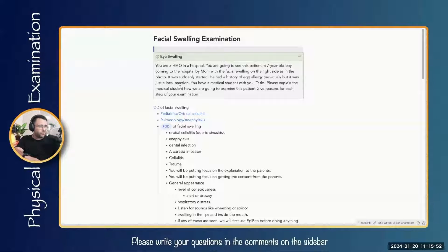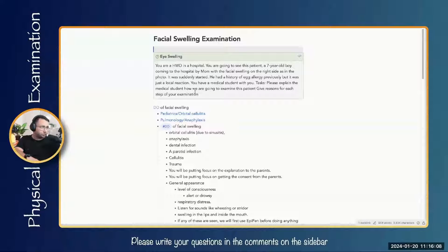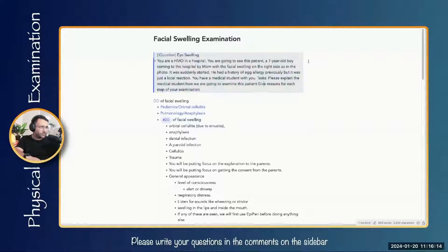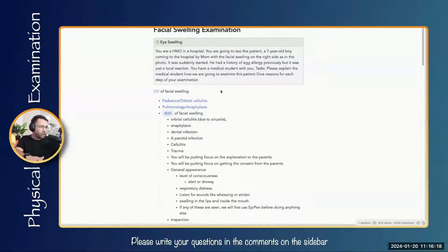The case from the recall is: you are a HMO in a hospital going to see a seven-year-old boy coming in with his mom with facial swelling on the right side, as shown in the photo. It was suddenly started. He had a history of egg allergy previously, but it was just a local reaction. You have a medical student with you. The task is to explain to the medical student how you are going to examine this patient and give reasons for each step of your examination.